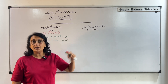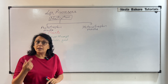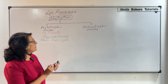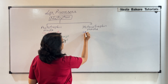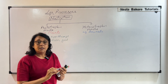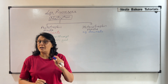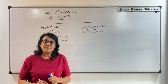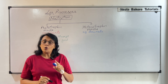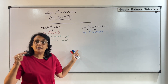Heterotrophic mode of nutrition means when the organism obtains its nourishment from some other organism. Our example here is of animals. Animals would either get their nourishment from eating a plant or some kind of animal product like eggs or meat — they are obtaining nourishment from other living organisms.